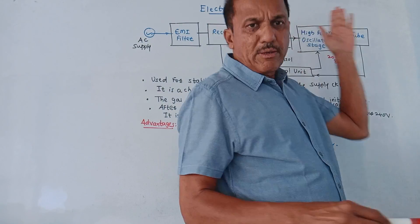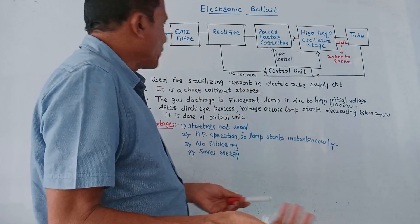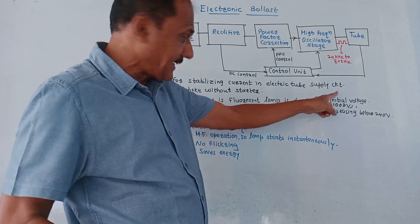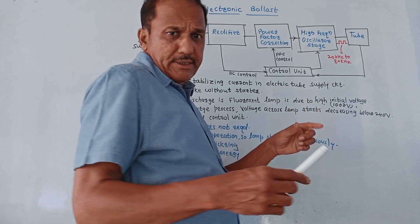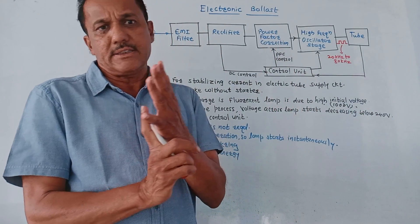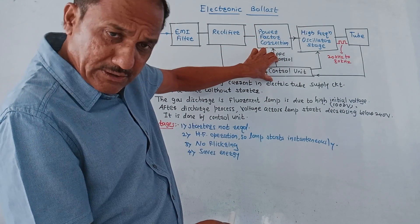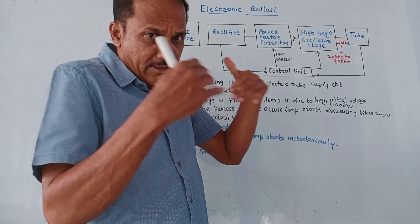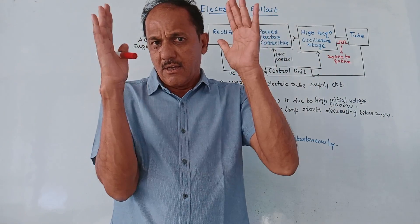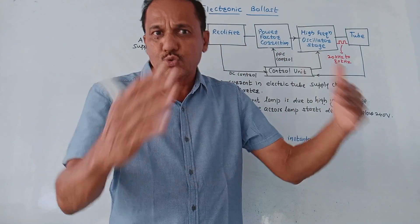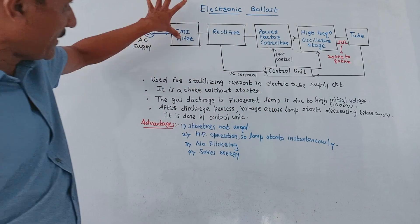The next application is the electronic ballast circuit. Basically, the electronic ballast circuit is used to stabilize the voltage and current across electric tubes — it stabilizes currents in the electric tube supply circuit. It can be considered as a choke without any starter. For a fluorescent lamp, initial gas discharge takes place by applying an initial very high voltage of around 1000 volts. After that, the control unit maintains the voltage across the fluorescent lamp below 240 volts. This is the block diagram of the electronic ballast circuit.